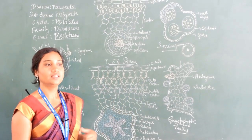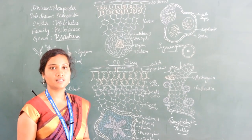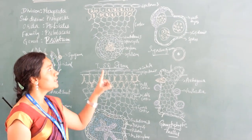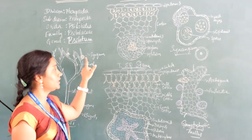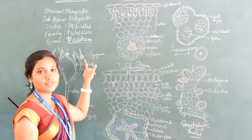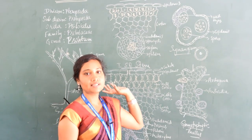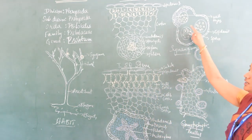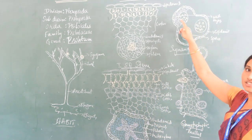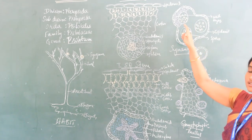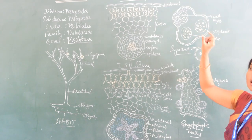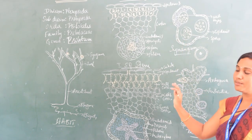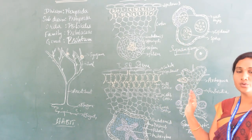Moving on to reproduction: since the plant body is diploid in nature, it reproduces through producing a spore-bearing structure called synangium. Synangium develops on a fertile leaf, at the axils of fertile leaves. In cross-section, it is a trilobed structure with 3 locules containing sporogenous tissues. Inside the locules, spores are present. All spores are of the same kind and same size; hence, the plant body is called homosporous.